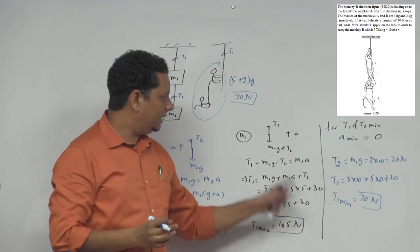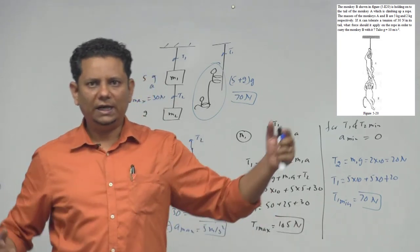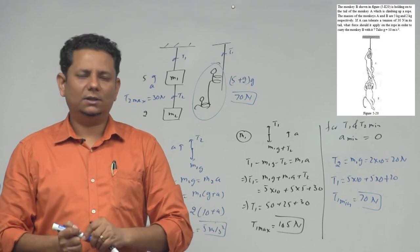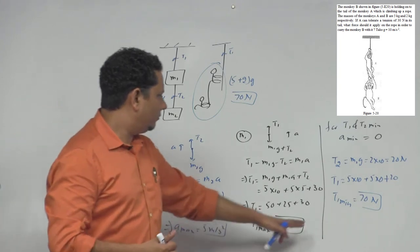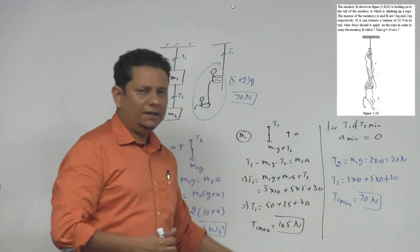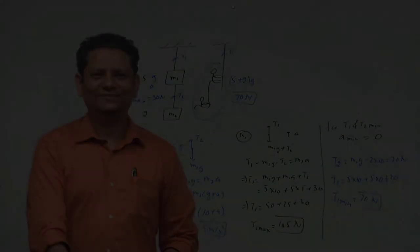Aur maximum value itani hai, so aapka force joh ho na chahiye, ager aapki pooch, are toot ke alag na ho jayay, maximum jet ka ya maximum strength, aapki woh maintain kar sake, so force should be between 70 and 105 newton.